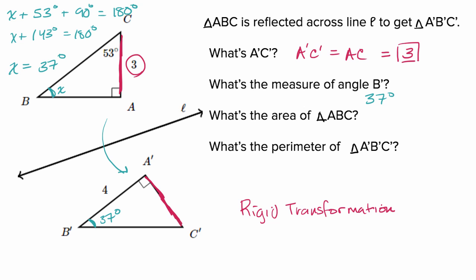Next, they ask us, what is the area of triangle ABC? Well, it's gonna have the same area as A prime B prime C prime, and so a couple of ways we could think about it.